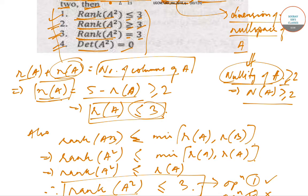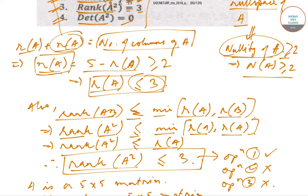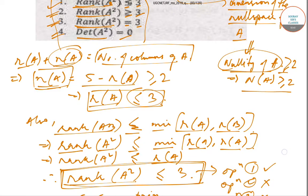We also know that rank(AB) ≤ min(rank(A), rank(B)). Therefore, rank(A²) = rank(A·A) ≤ min(rank(A), rank(A)) = rank(A). Since rank(A) ≤ 3, it follows that rank(A²) ≤ 3.